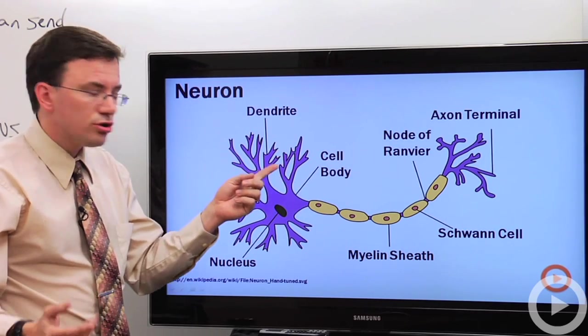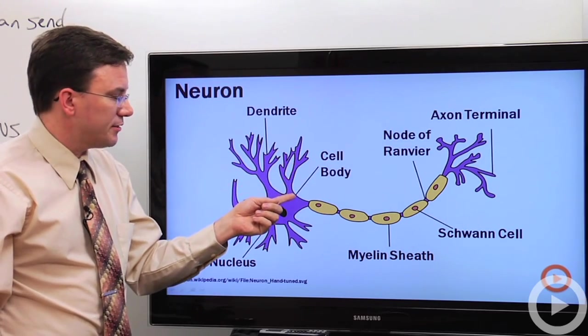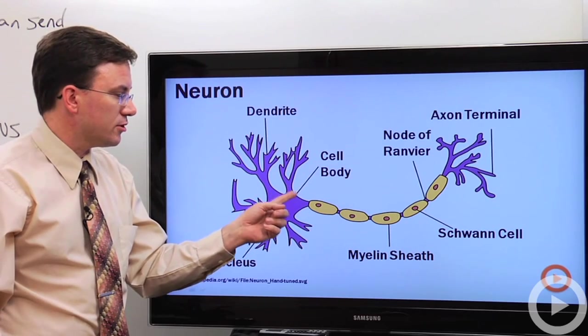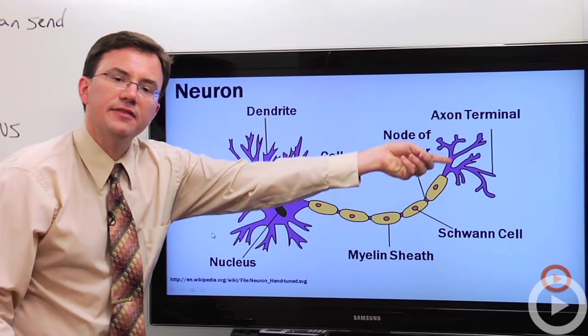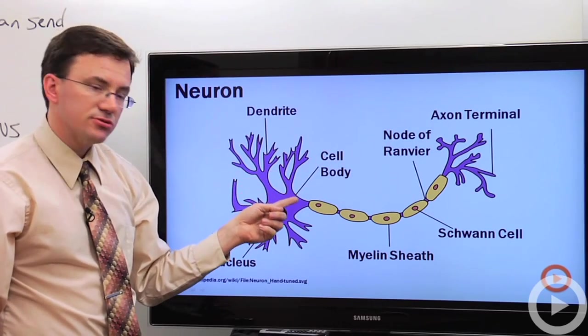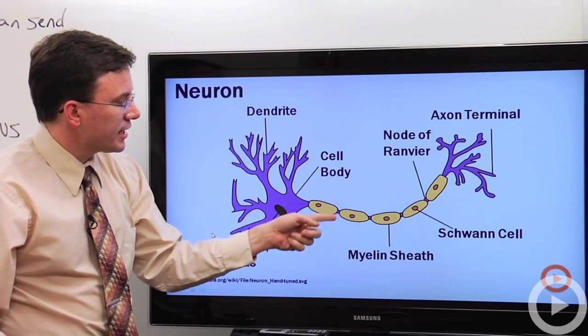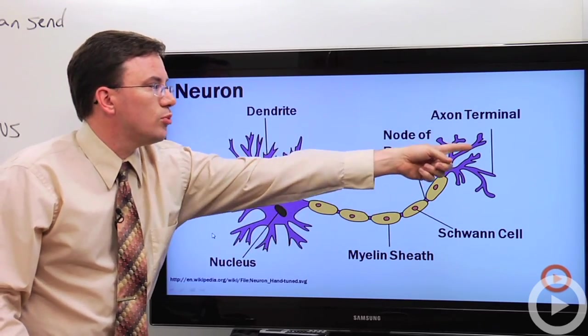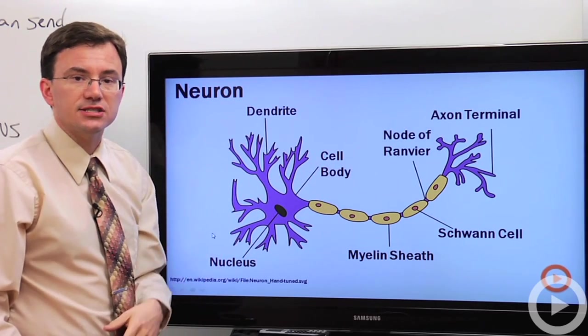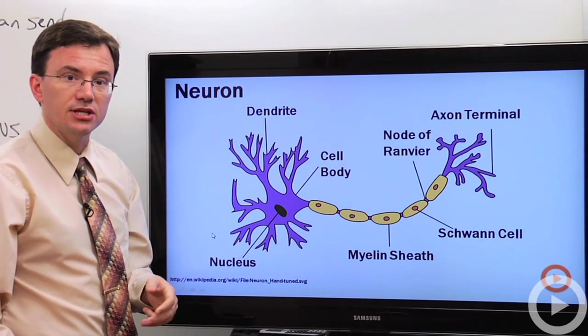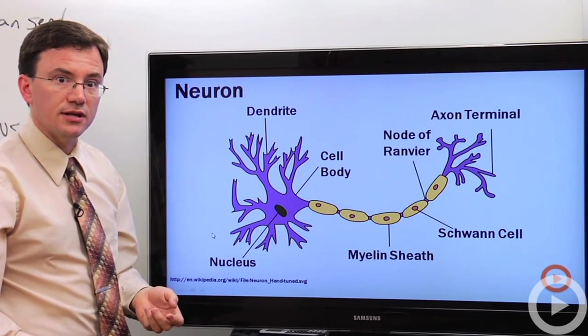So, an action potential or nerve signal will come along the dendrite, and then the cell body will say, yes, send it along, and it'll go along. These action potentials travel along membranes, but they can jump from node to node to node. When they reach the end of the axon, called the axon terminal, then it has to use another means of communication to send its signal to the next cell.